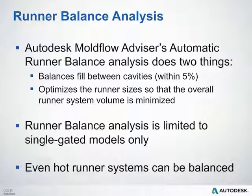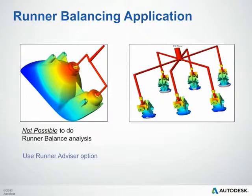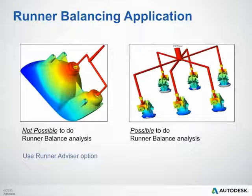You can even balance hot runner systems if you wish. As discussed, there are a few applications that may not be suitable for the runner balance analysis. For example, the image on the left is not possible to run a runner balance analysis on, while the runner balance analysis can be run on the part displayed in the image on the right. The runner balance analysis is meant for balancing flow between cavities, not within a single cavity.